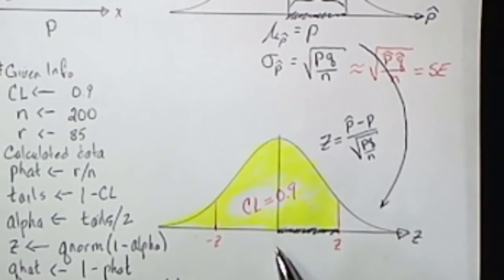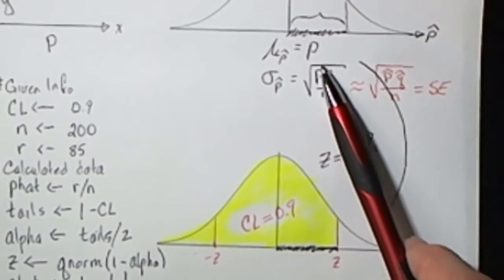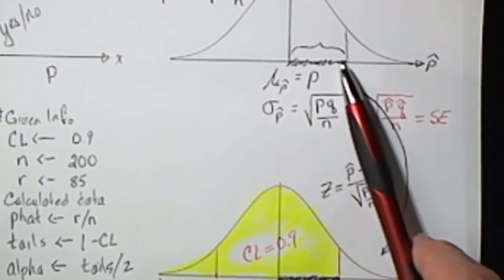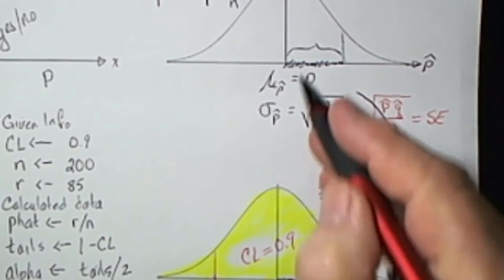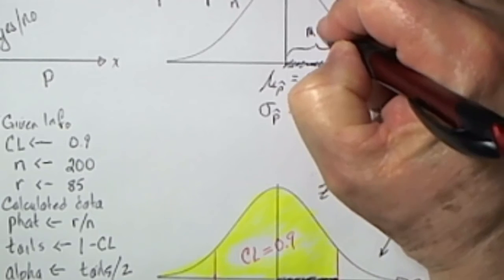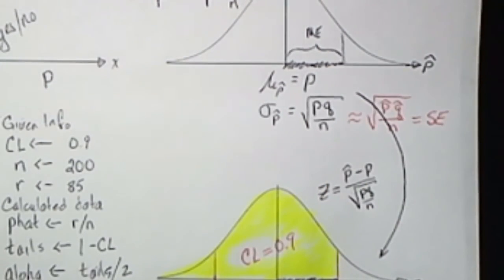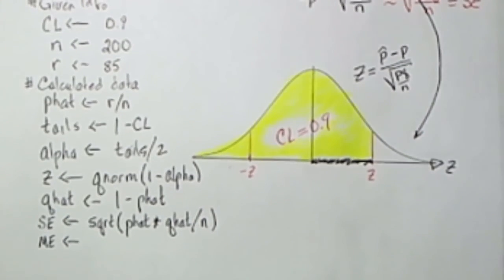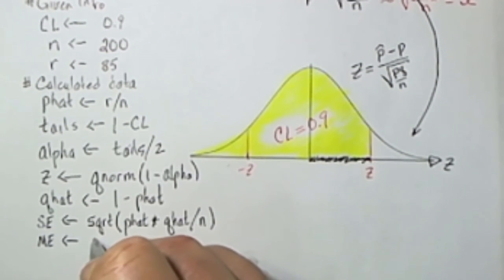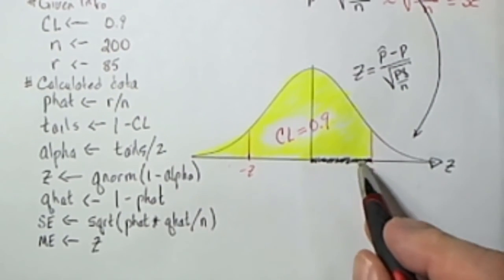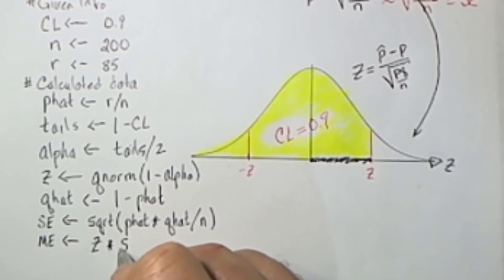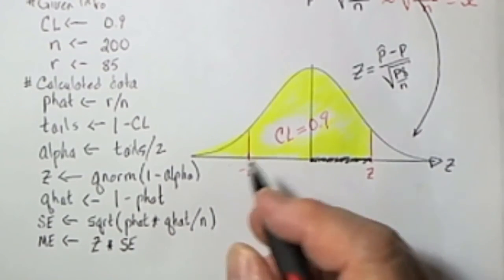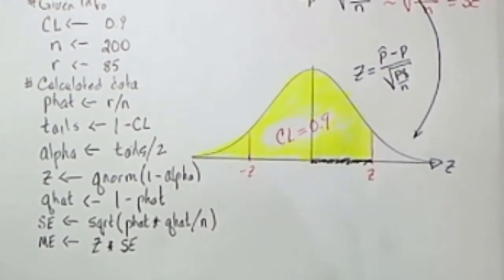Now when we move this distance back up to here and measure it in P hats instead of standard deviations we're going to call that a margin of error. The margin of error is simply that Z value which tells how many standard deviations I need to be away from the mean times that standard error that we've calculated which is our best approximation for the standard deviation up here.